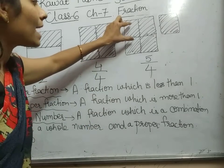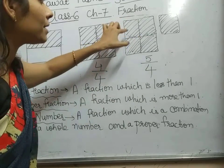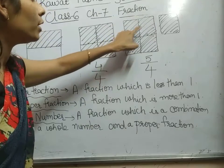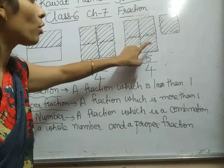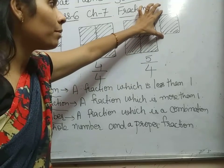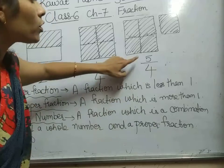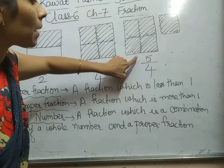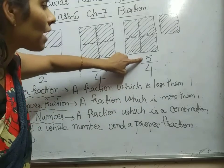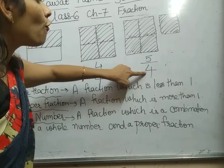Now here, as you can see, there are how many parts? One, two, three, four. And this is one more part attached to it. So, how many shaded parts? Yes, five. Five out of four.